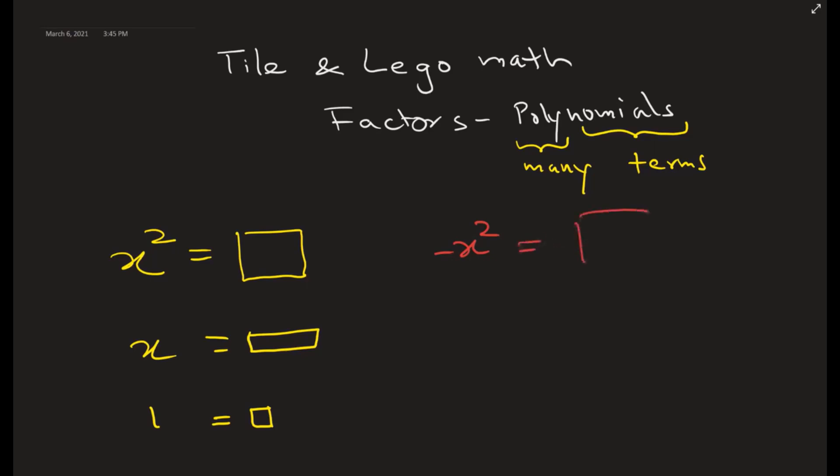Let's think: negative x squared is a red square, negative x is a red rectangle, and negative 1 unit (the constant) is a small red box.